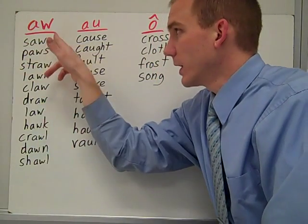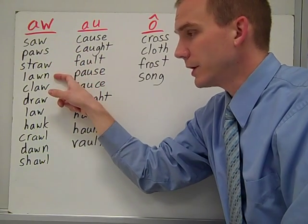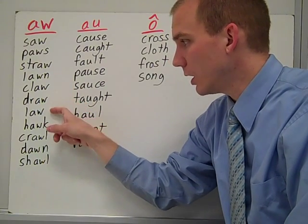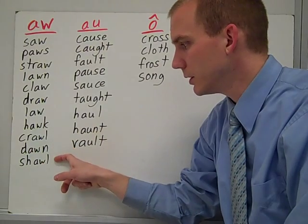So, we have our aw words: saw, pause, straw, lawn. Hear that aw in them? Claw, draw, law, hawk, crawl, dawn, shawl.